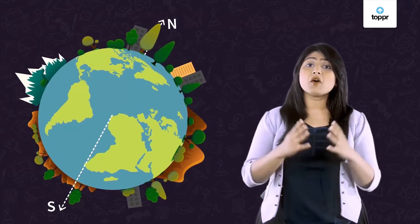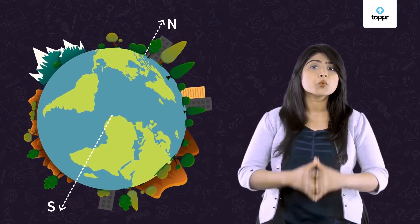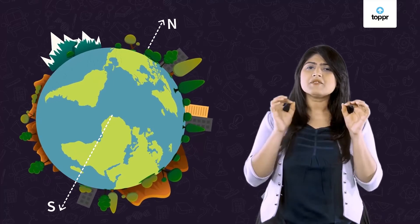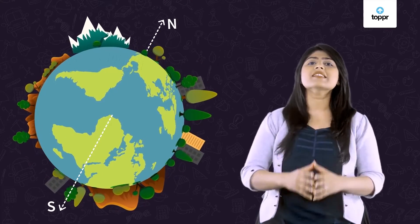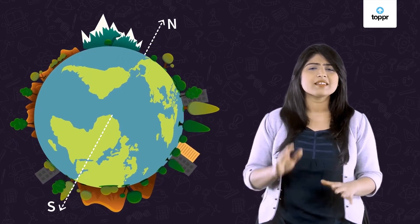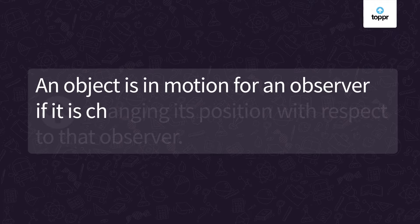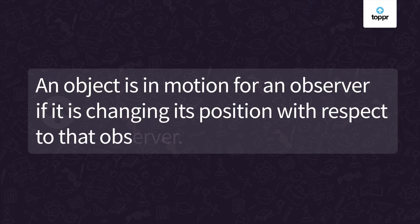So whether an object is at rest or in motion depends on the observer too. For the sake of simplicity in our lesson, we will talk about motion with respect to earth, which means that if something is stationary when observed from the earth's surface, we will consider it to be at rest — like this tree. We know that an object is in motion for an observer if it is changing its position with respect to that observer.